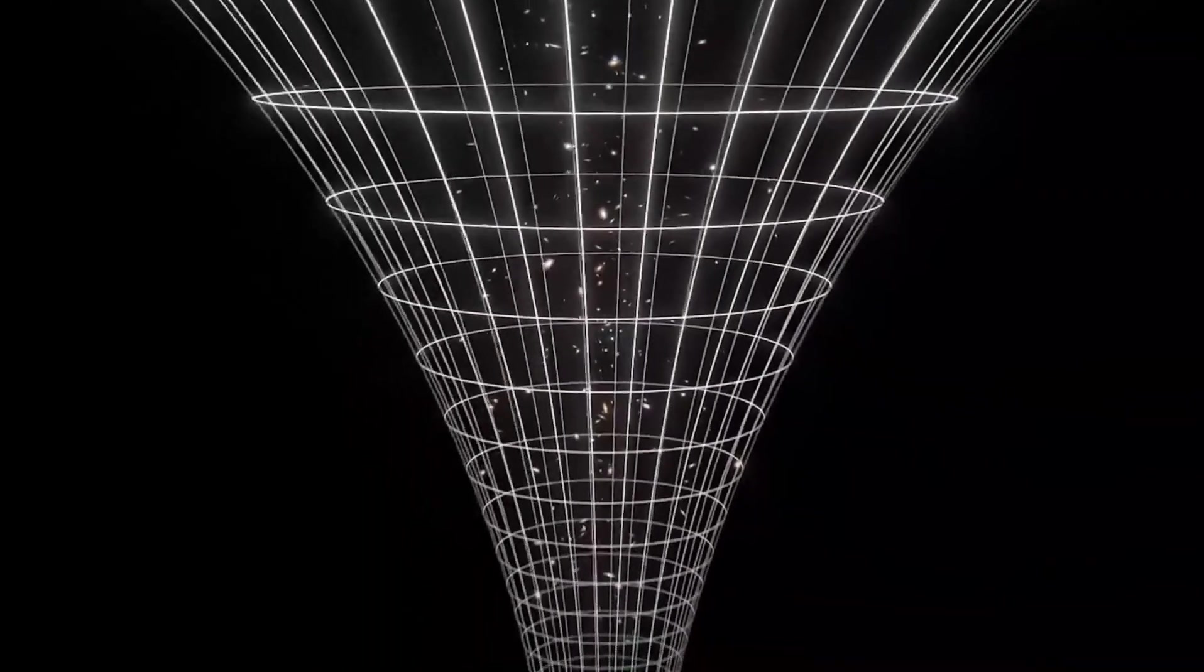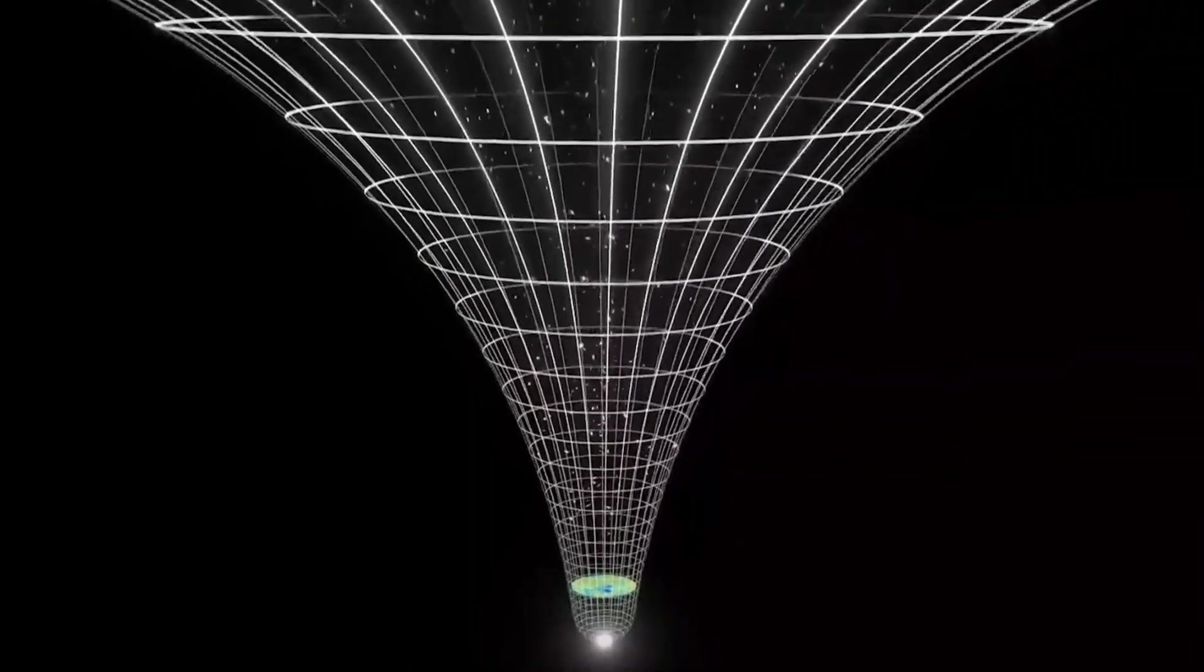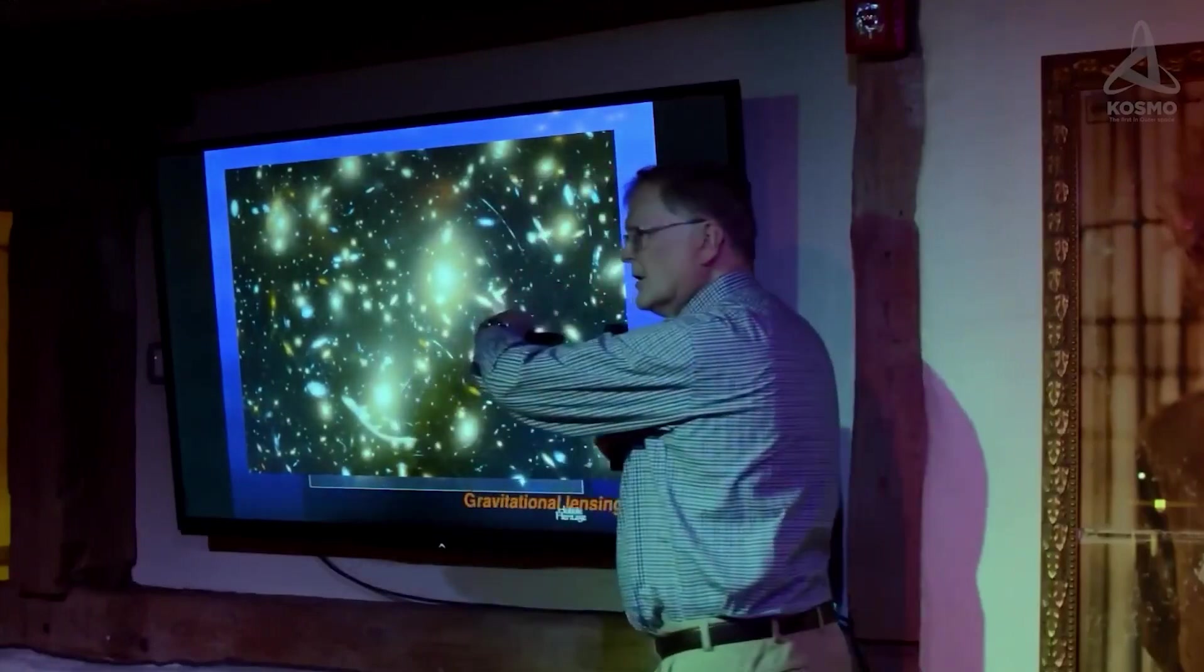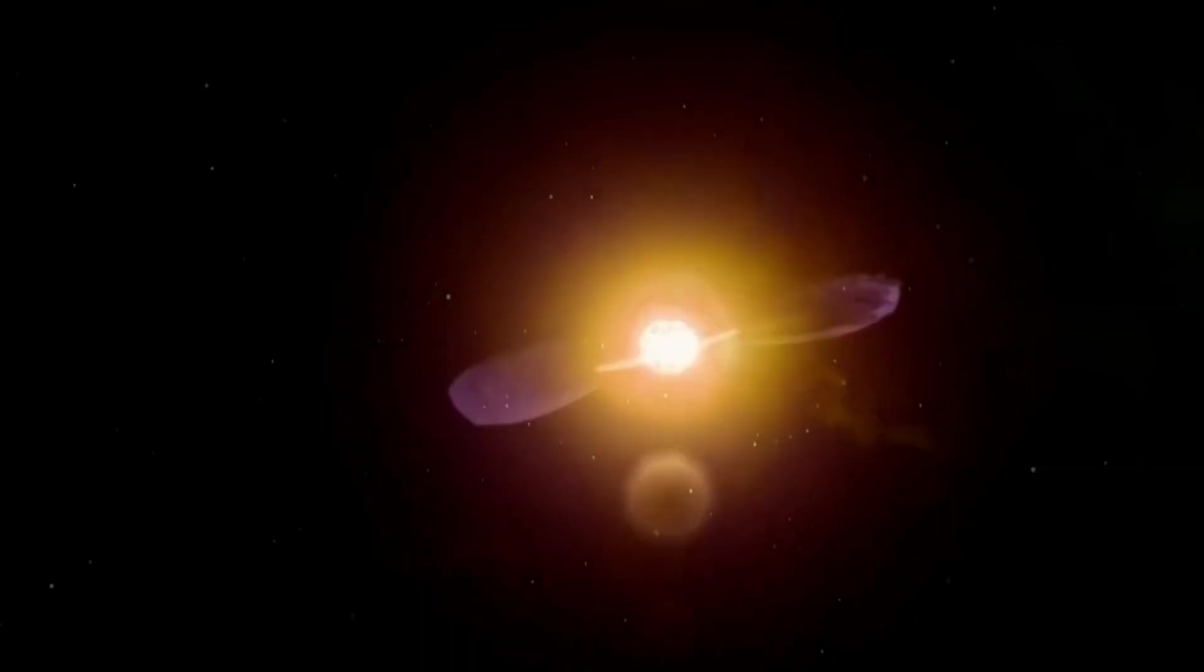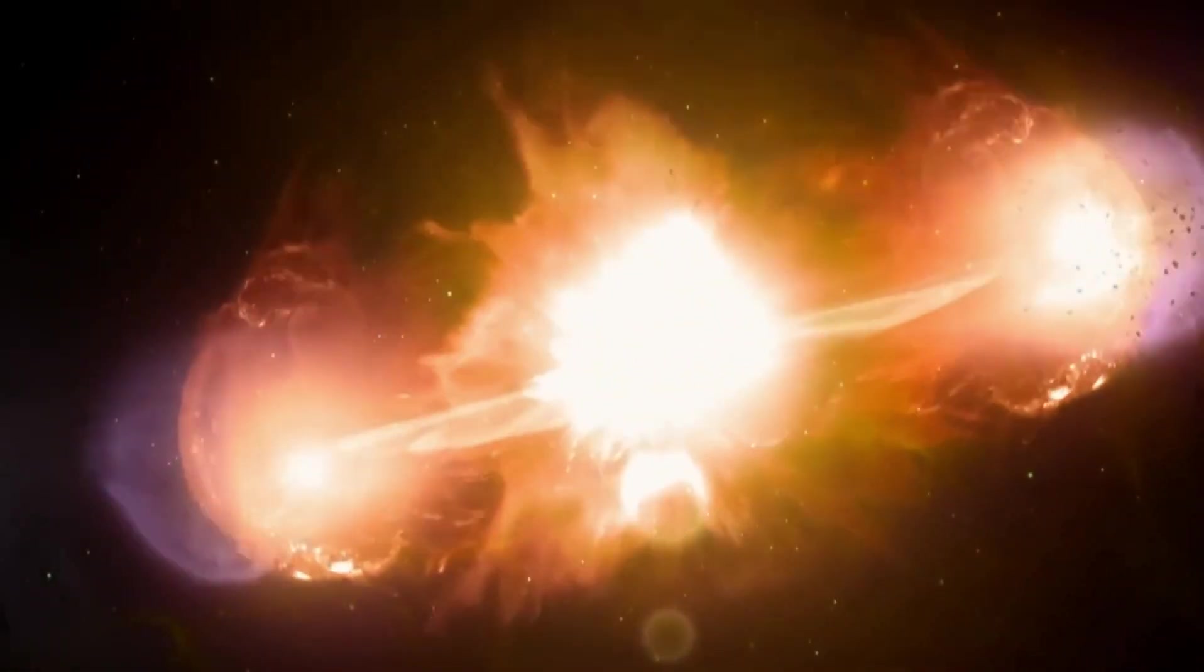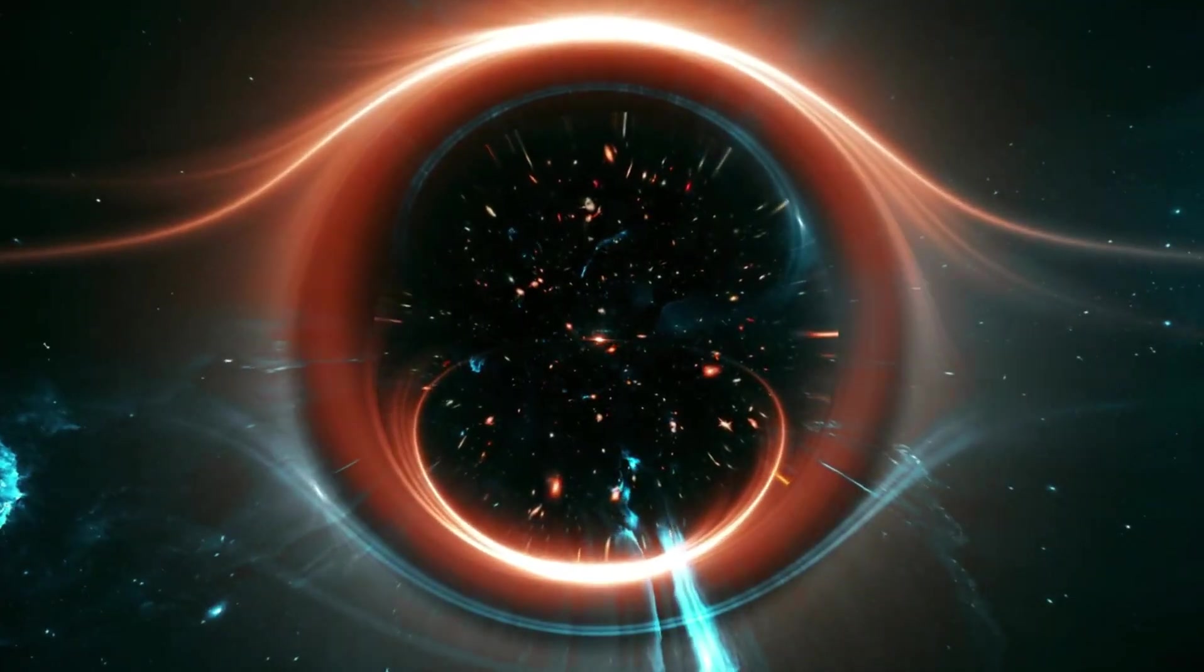Even something as close, on a cosmic scale, as the Moon, which is a minuscule 239,000 miles away from Earth, is affected by the phenomenon. Light that hits the Moon takes about 1.3 seconds to travel across those 239,000 miles and reach your eyes, according to NASA.